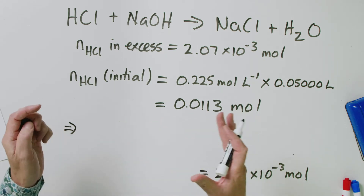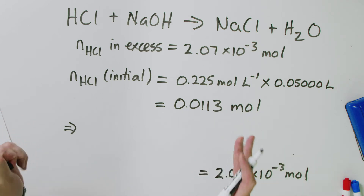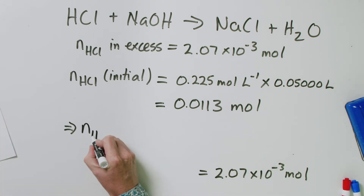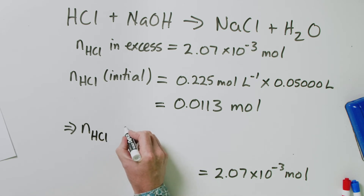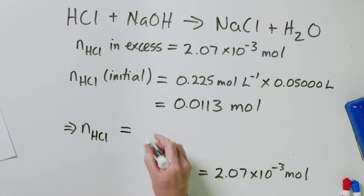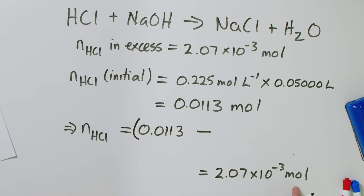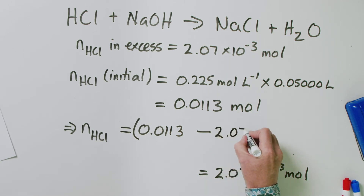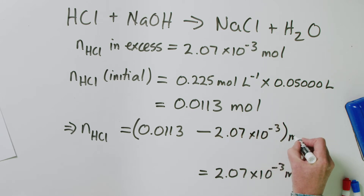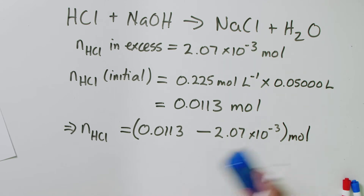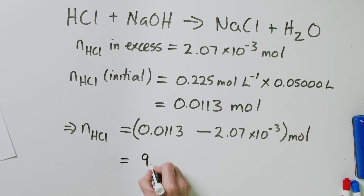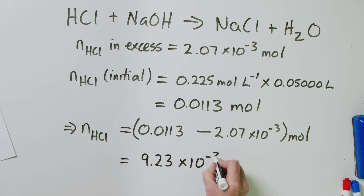This is what we had initially, and this is what was left over, so the difference gives us the moles of HCl that actually reacted with the sodium carbonate. Moles of HCl that reacted with sodium carbonate = 0.0113 − 2.07 × 10⁻³ = 9.23 × 10⁻³ mol.